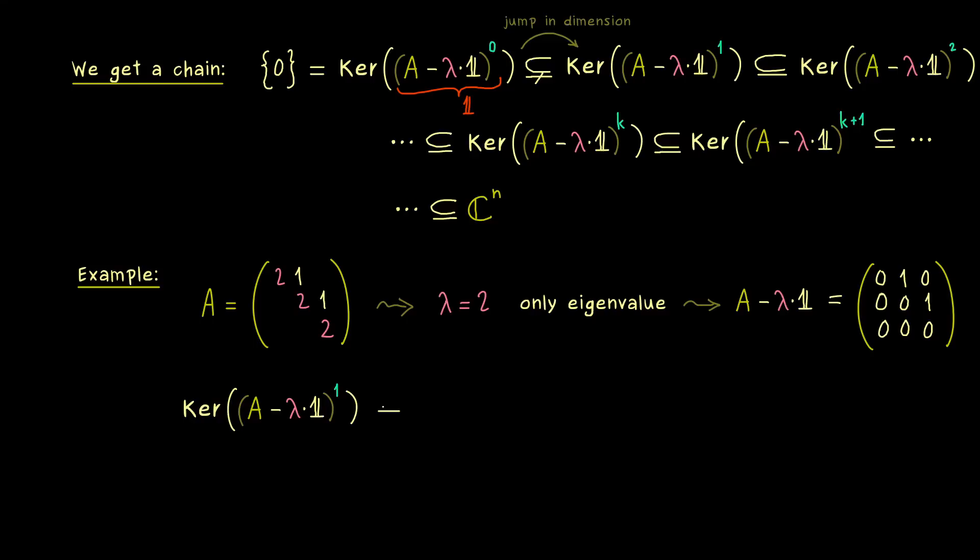And moreover also calculating the kernels is quite simple. In fact for our first power we already have the row echelon form so we can read the whole kernel immediately. So you see we have two pivots here and only one free variable. Therefore this kernel is definitely just one dimensional.